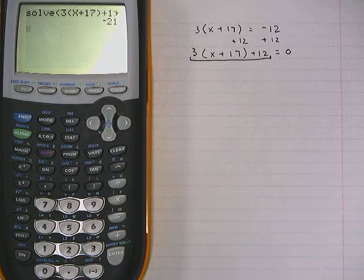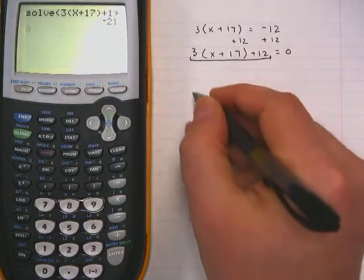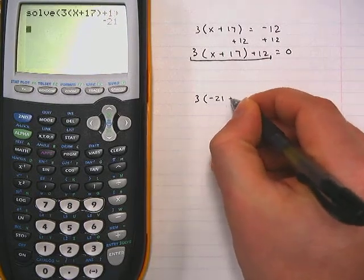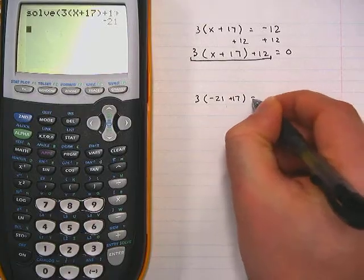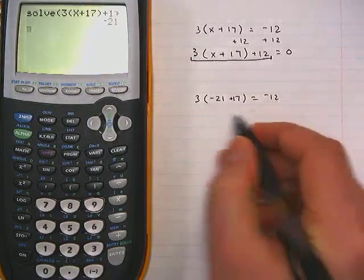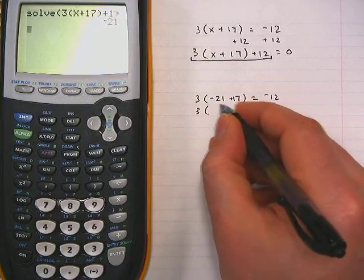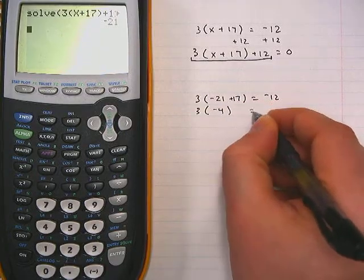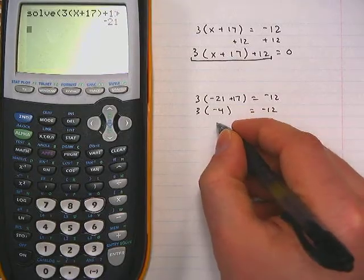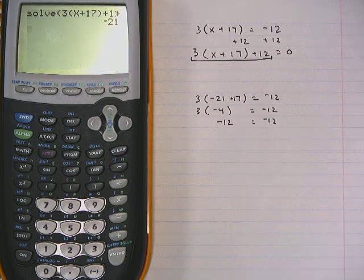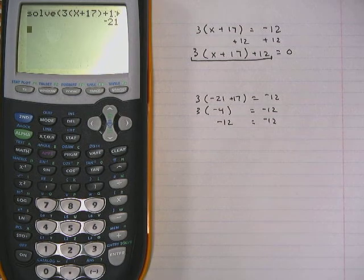It tells us it's negative 21. We can check this by plugging it back in. I'll do this by hand just to prove to you. 3 times negative 21 plus 17 equals negative 12. So 3 times, sorry, negative 21 plus 17 is negative 4, which equals negative 12. And guess what? 3 times negative 4 equals negative 12. The calculator got us the correct answer.